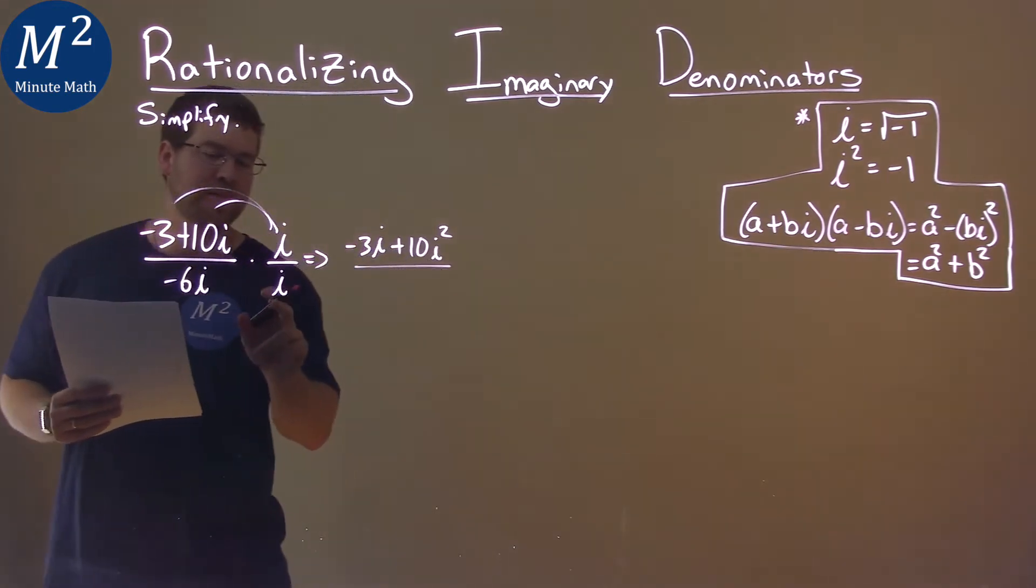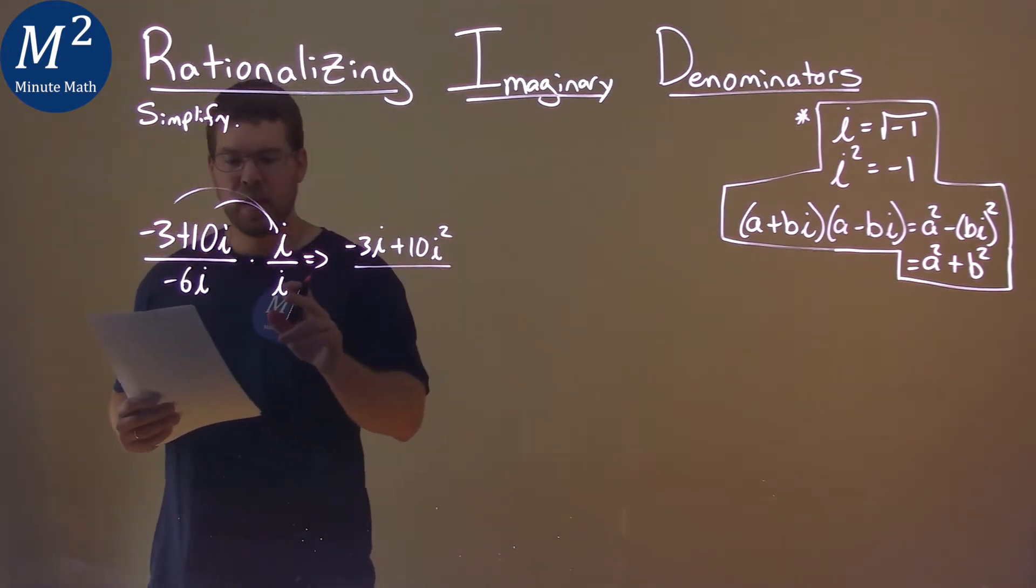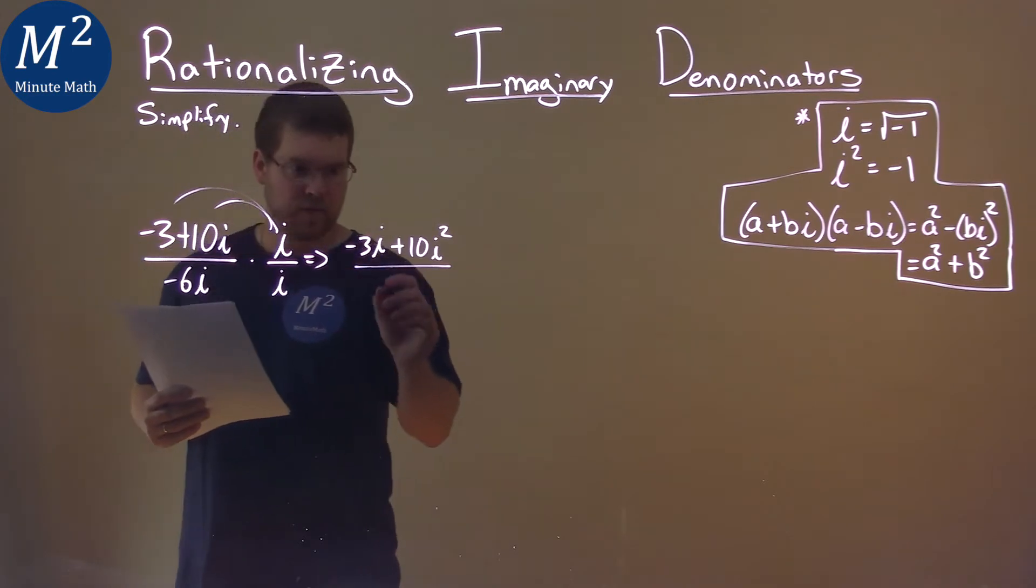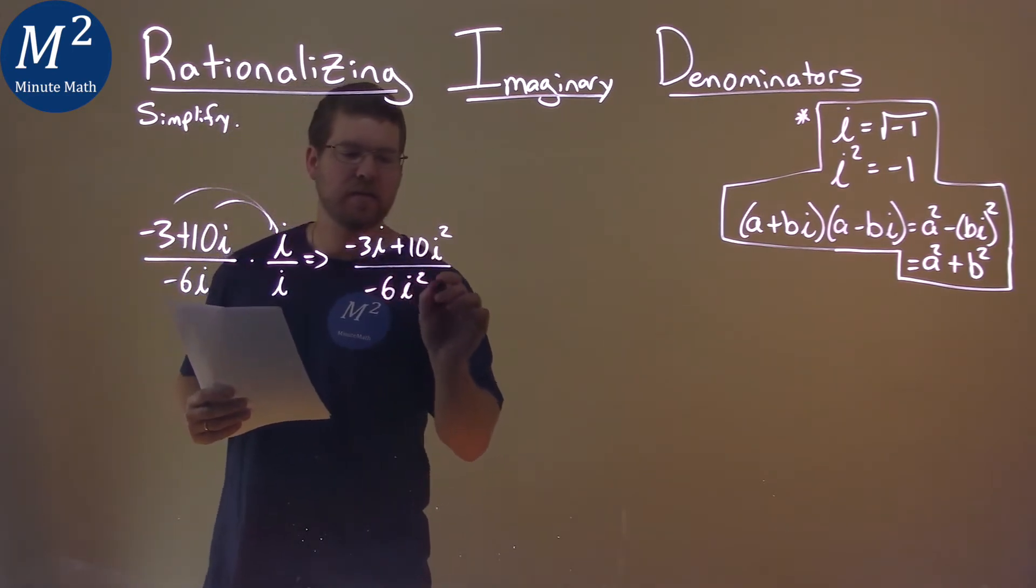But what this whole thing really is doing is getting i out of the denominator. i times i is i squared, so we have negative 6i squared.